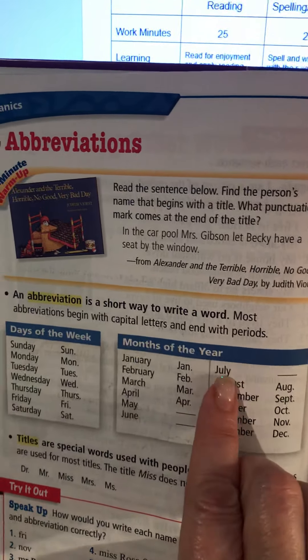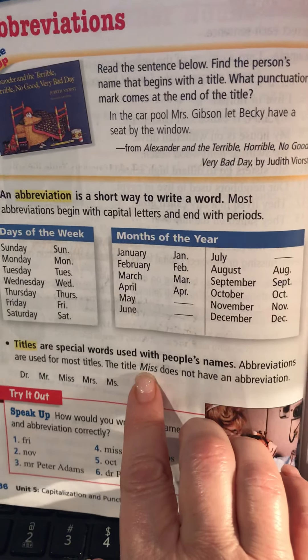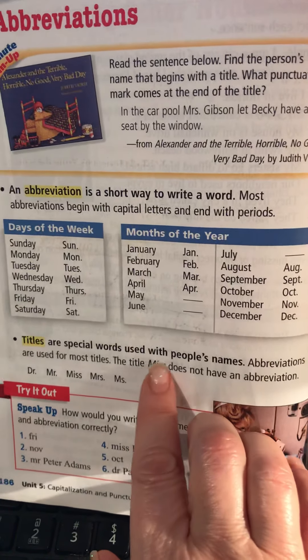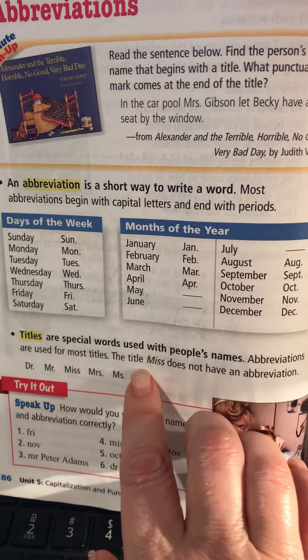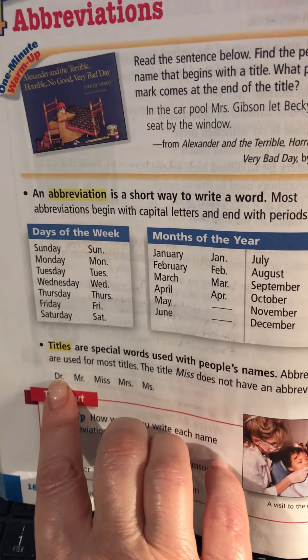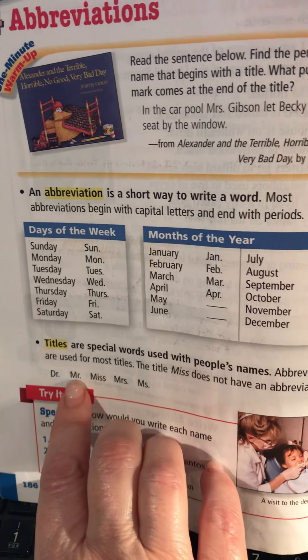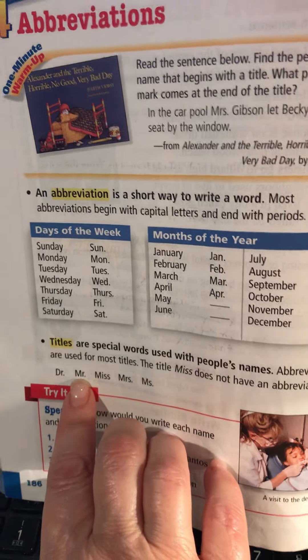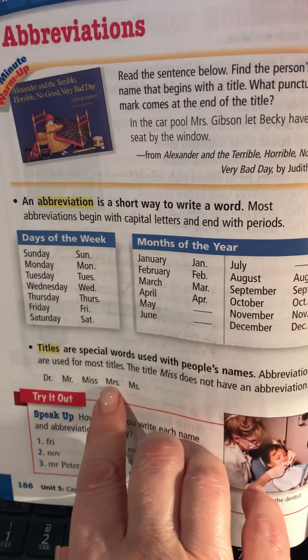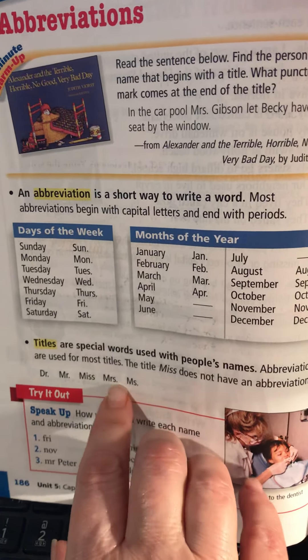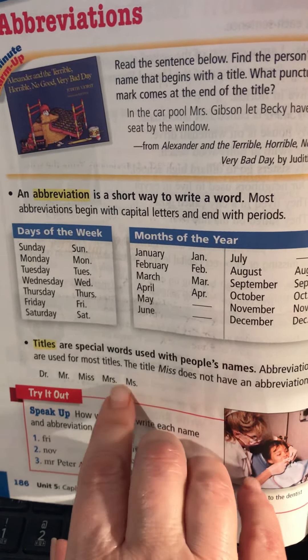Titles are special words used with people's names. We will also look at these for a moment. Abbreviations are used for most titles. The title 'Miss' does not have an abbreviation because, once again, it's a small word — only four letters. Doctor is the abbreviation for D-O-C-T-O-R, and Mister is abbreviated for M-I-S-T-E-R.